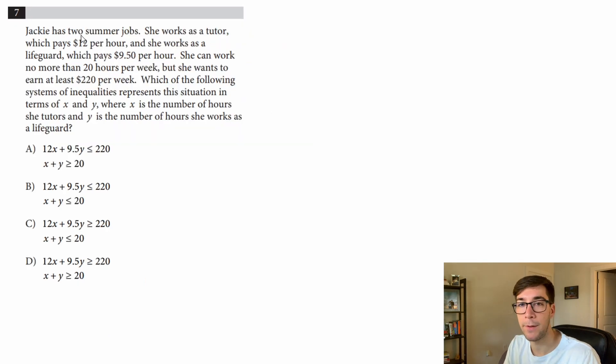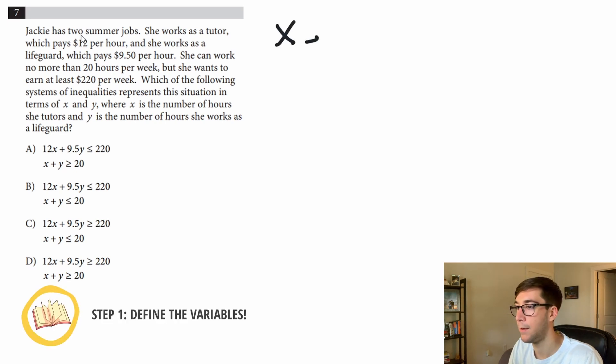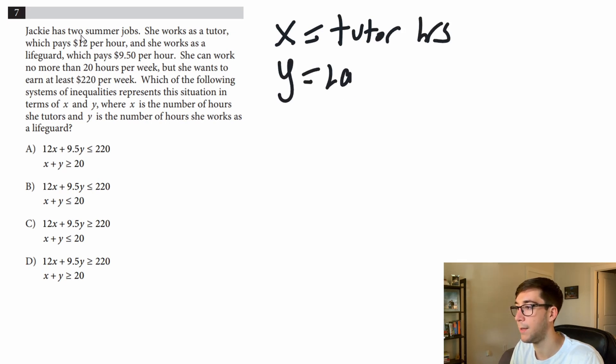First thing we want to do is define our variables. She has two jobs, so the first one would be x, that's going to be tutoring hours, and the second one is lifeguard, so it's going to be lifeguard hours. Now we need to set up our two equations. Let's do one at a time.